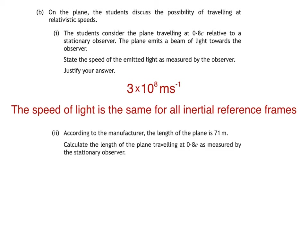Here's B part 2. According to the manufacturer, the length of the plane is 71 metres. Calculate the length of the plane travelling at 0.8c as measured by the stationary observer. 0.8c means the plane is moving at 0.8 times the speed of light. An observer on the plane would measure what's known as its proper length of 71 metres, whereas an observer in another inertial reference frame — like the stationary observer on Earth — would measure a shorter length. This phenomenon is known as length contraction, and the contracted length can be calculated using this equation.